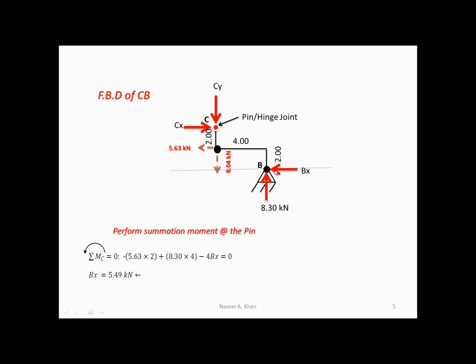We have one more force that will create a moment — BX. The perpendicular distance for BX will be 2 plus 2. The line of action gives a negative rotation, so we have minus 4 BX. We can crunch the numbers and solve for BX — BX is equal to 5.49 kN acting to the left. And that is also the correct assumption.